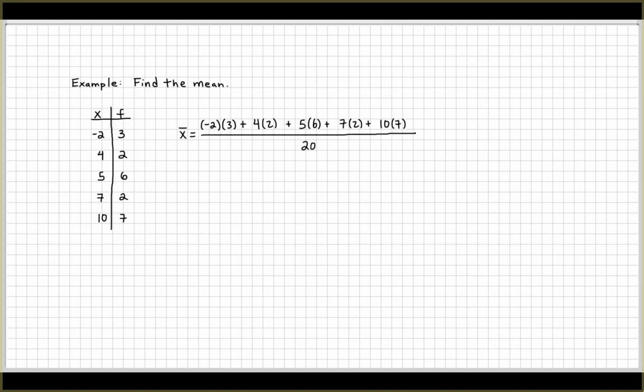All divided by 20. Now how do we get 20? Well, the frequency count. What's the total frequency count? And you add that up, it's going to give you 20 observations.